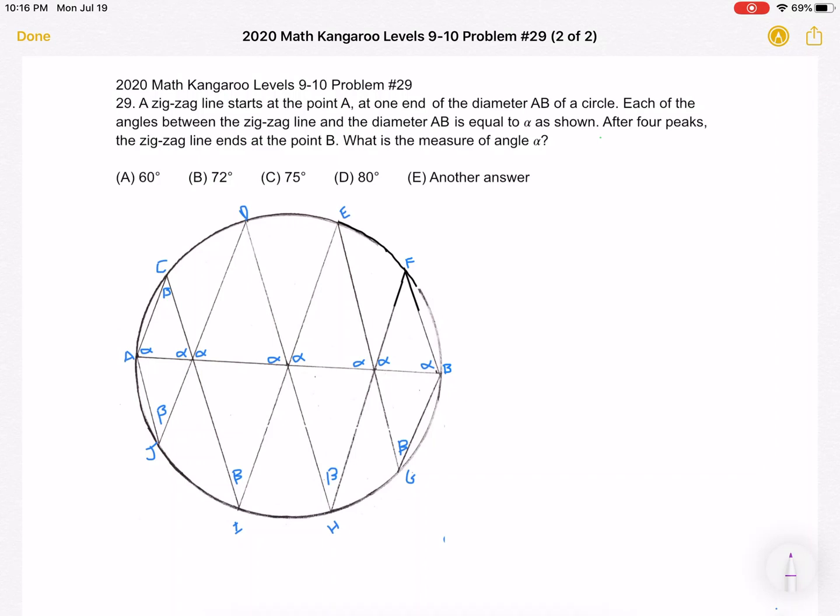I have expanded upon the diagram given to us in the problem. Because we know that after four peaks, the zigzag line ends at point B. So I drew that. As you can see, we have four peaks, and then the line ends at B.